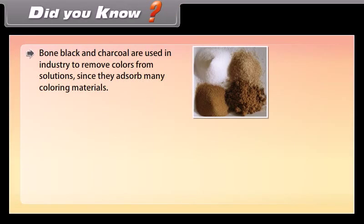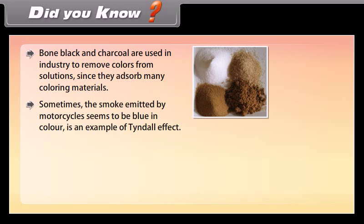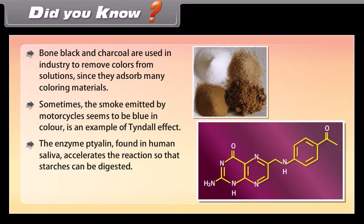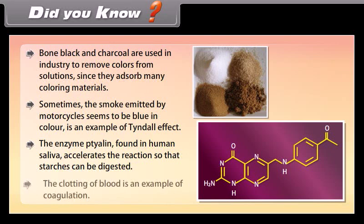Did you know: bone black and charcoal are used in industry to remove colors from solutions since they adsorb many coloring materials. Sometimes smoke emitted by motorcycles appears blue in color — this is an example of the Tyndall effect. The enzyme ptyalin found in human saliva accelerates the reaction so that starches can be digested. The clotting of blood is an example of coagulation.